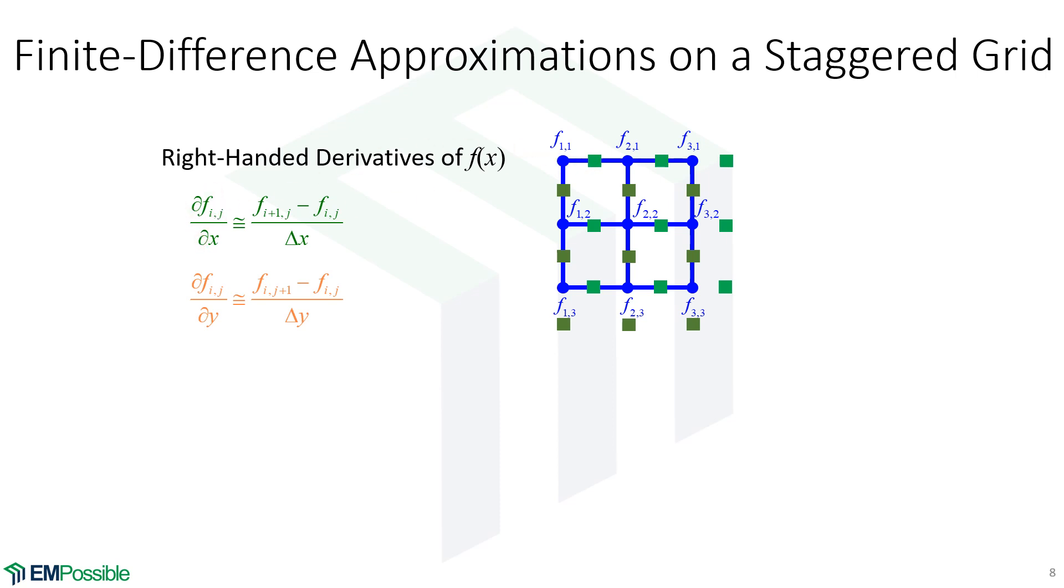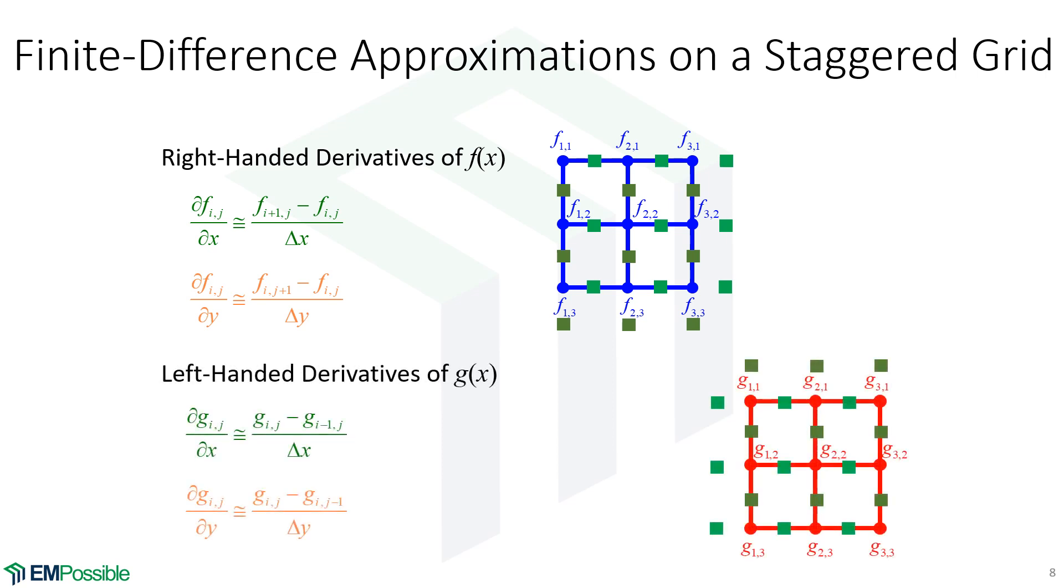In the y direction, now we're taking derivatives this way, and with central finite differences, our derivatives would exist at the midpoint. This is suggesting some kind of staggered grid. Our other function g would have the midpoints to the left. The f's had our midpoints to the right of the f's. The g's would have them to the left. For example, if we want the derivative at this point, we're going to have g2,2 minus g1,2 divided by delta x. A derivative in this direction would have g2,2 minus g2,1 divided by delta y.